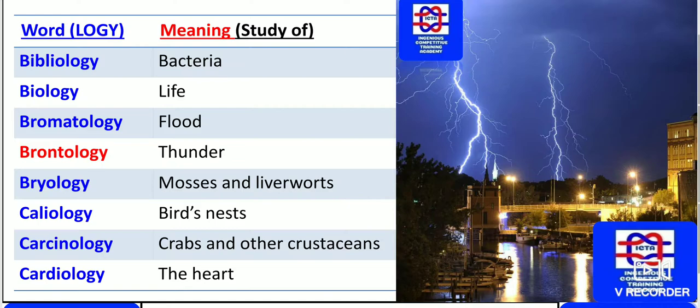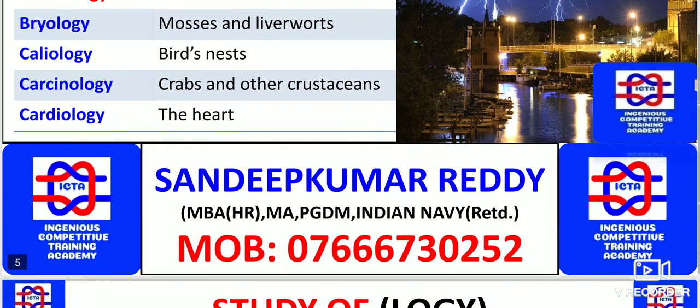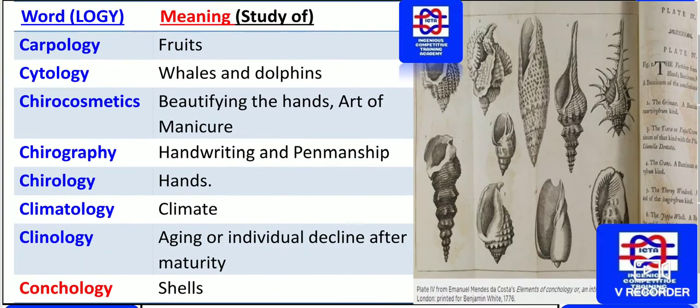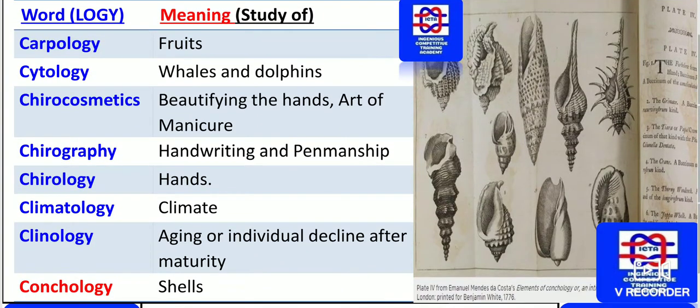The study of birds' nests and nest-making behaviour is known as calliology. Crabs and other crustaceans — the study concerning crabs is known as carcinology. The study of the heart is known as cardiology; the doctor who deals with the heart is called a cardiologist. The study of fruits is known as carpology.